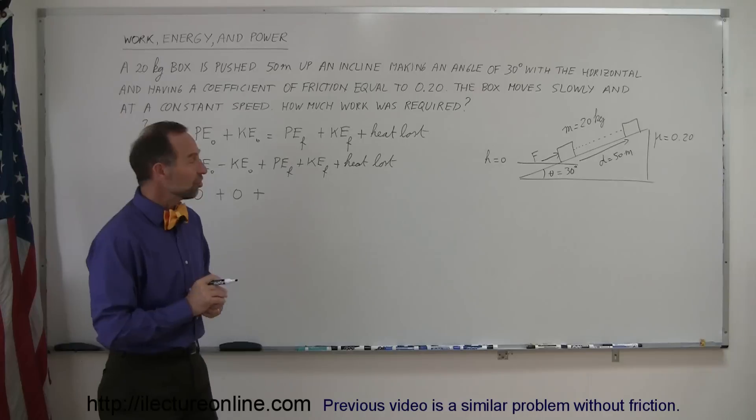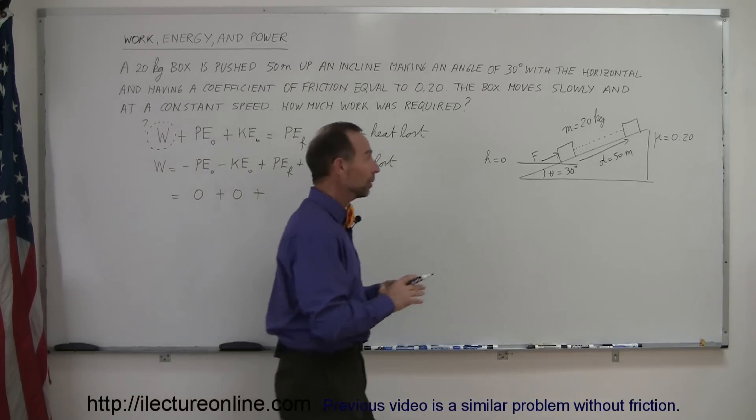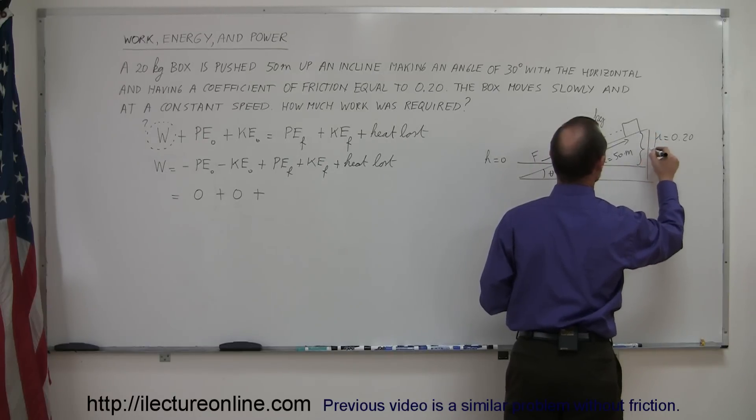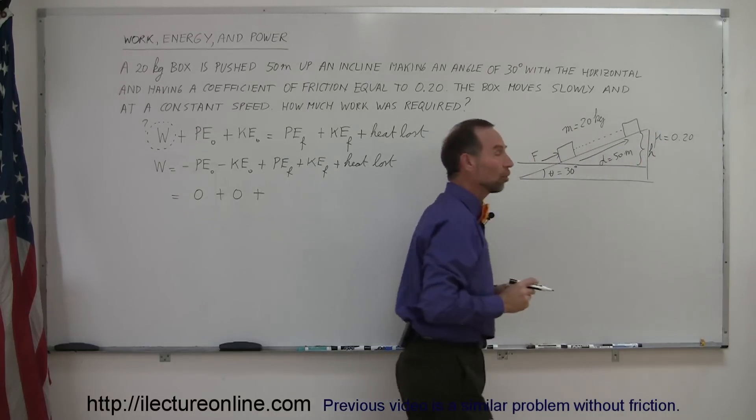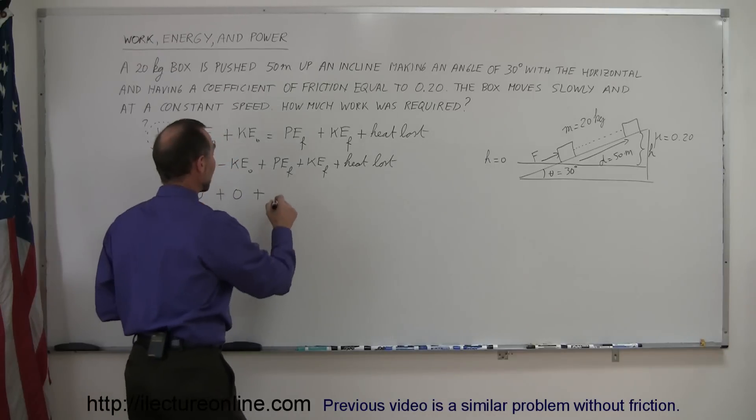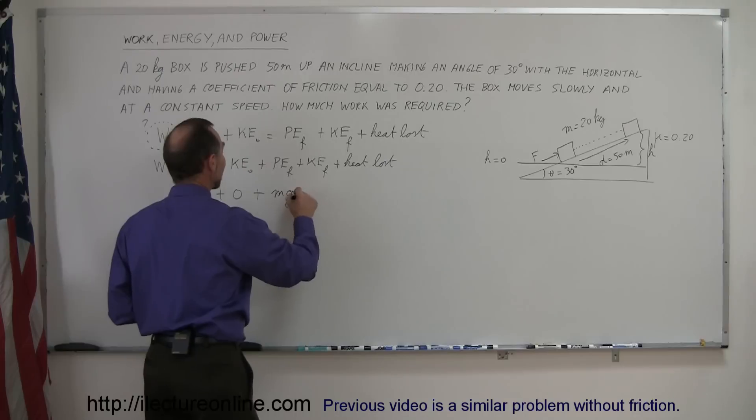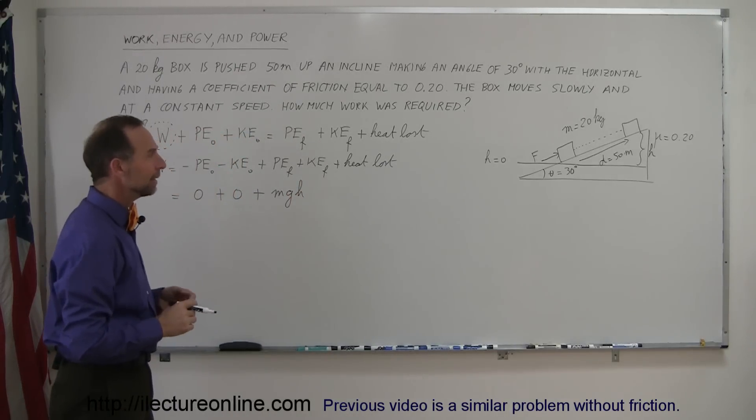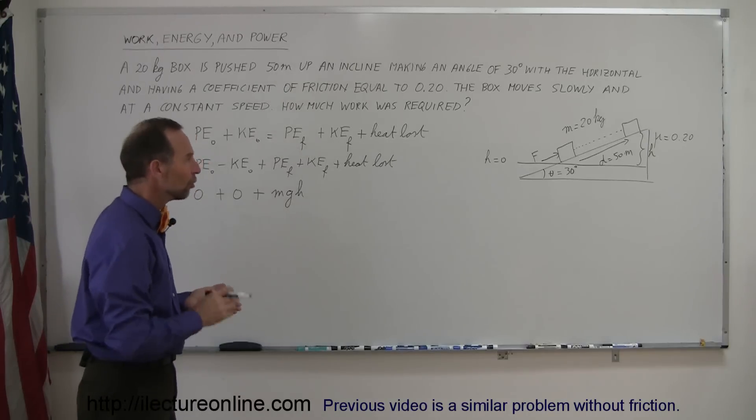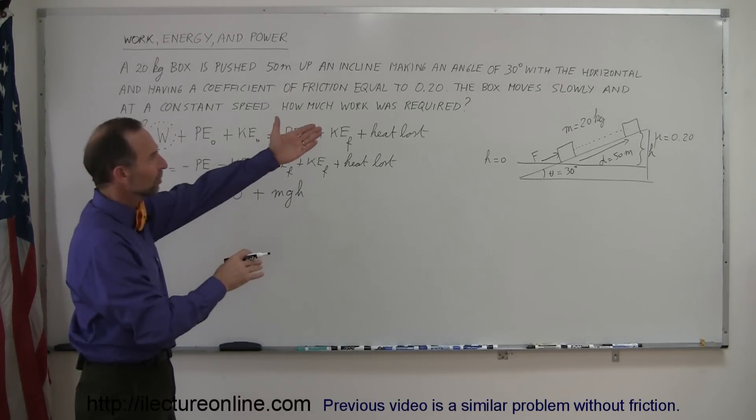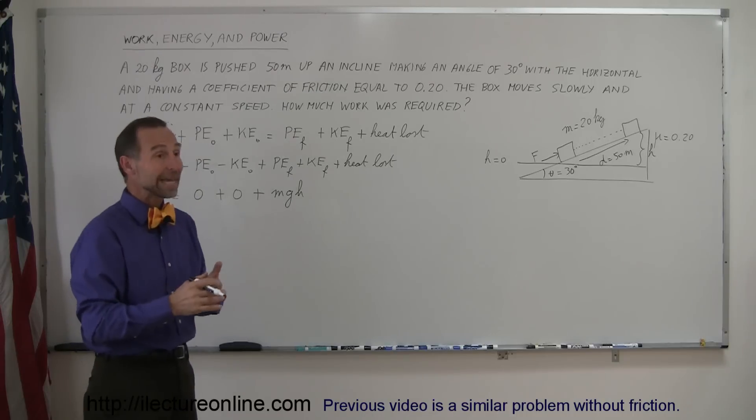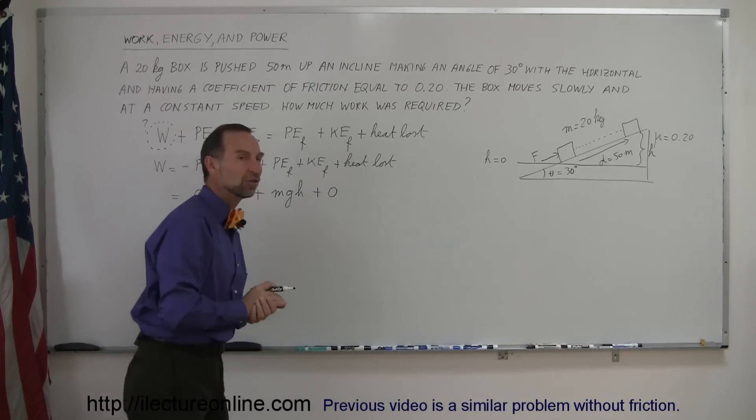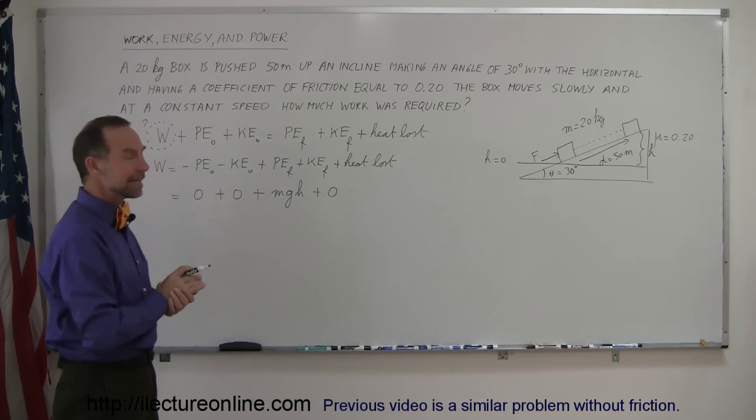Now, potential energy final means at the end of the problem, when the box reaches this height, it has now gained some height, right here, and let's call that height H. So it's gained potential energy, so we can write that it has gained MgH, Mg times H, the weight times the height that it has gained. And then, since the final speed of the box is no different from the initial speed, because we say that the box moves very slow at constant speed, so there's no gaining speed, there's no gaining kinetic energy, so we can say that at the end, we can consider kinetic energy zero. And then finally, heat lost.